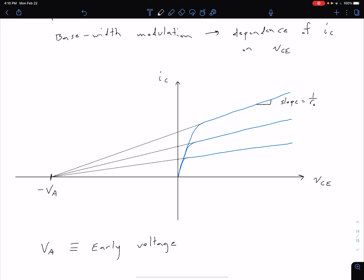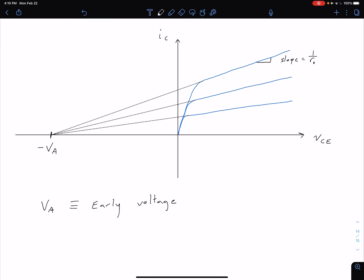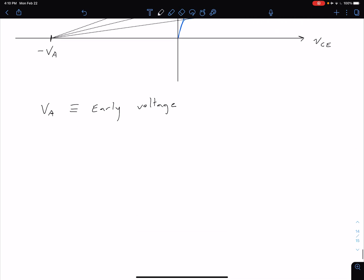So our slope is equal to 1 over R0 and we're going to come up with a more exact equation for our R0 by considering an adapted equation for our collector current. So our collector current before we said was IC is equal to IS, some reverse saturation current, times the exponential of VBE divided by our thermal voltage VT.